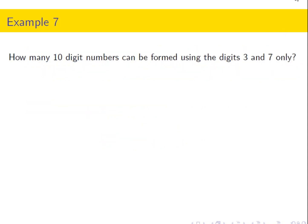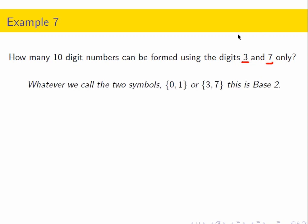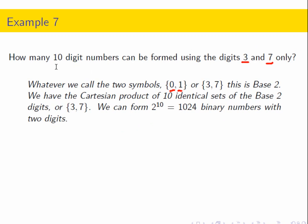How many 10-digit numbers can be formed using the digits 3 and 7 only? This is like working in base 2 — it doesn't matter what you call the symbols; I just get to use two of them. I'm making words with a two-symbol alphabet. For each of the 10 digits, I get a choice of two things, so it's simply 2 to the 10th. This is a Cartesian product where every set has two items, taken 10 times.